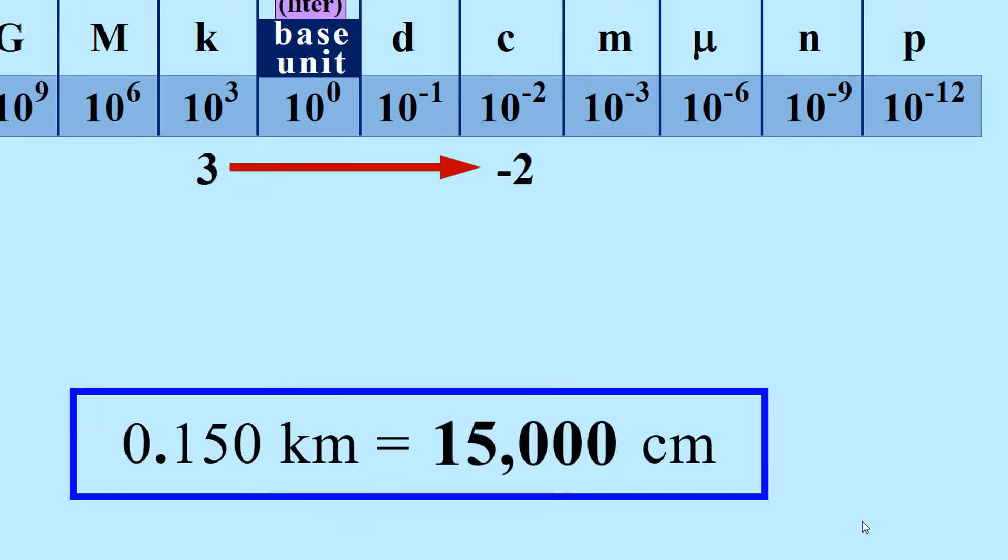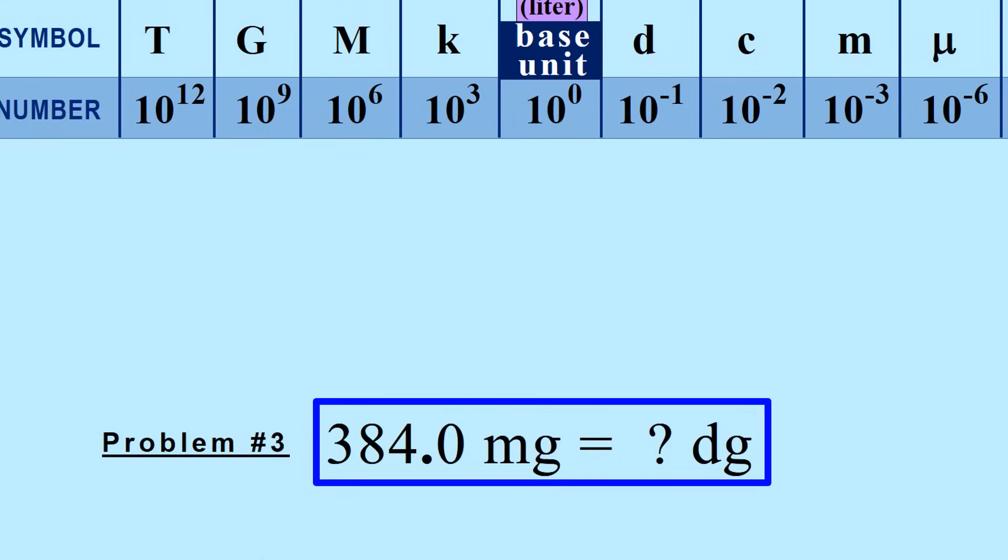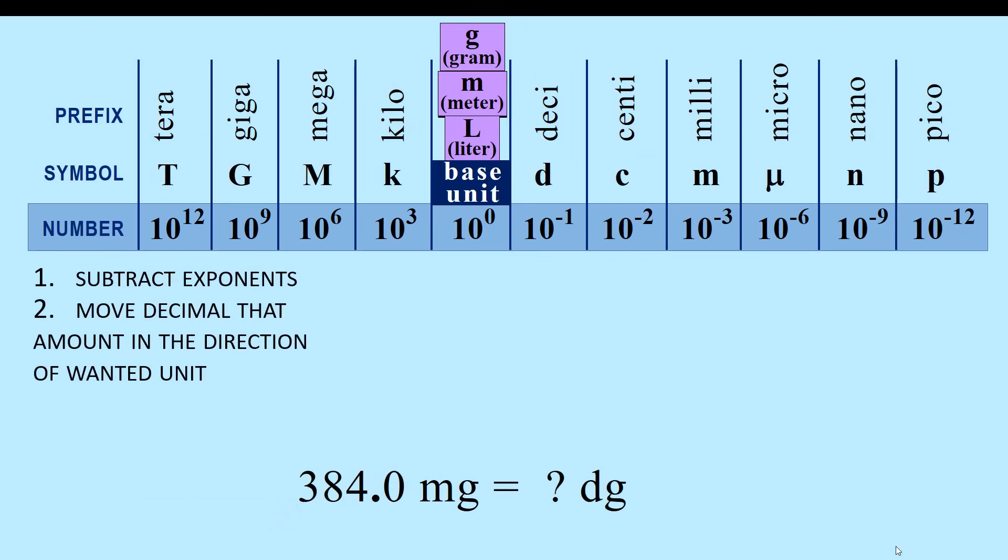For the first two examples, we went from a larger unit to a smaller unit. Let's see how to convert from a smaller unit to a larger unit. 384.0 milligrams is how many decigrams? We use the same steps as before. We are starting with milli and want to get to deci. The exponent for milli is negative 3, and for deci it is negative 1. We subtract and the difference is 2.